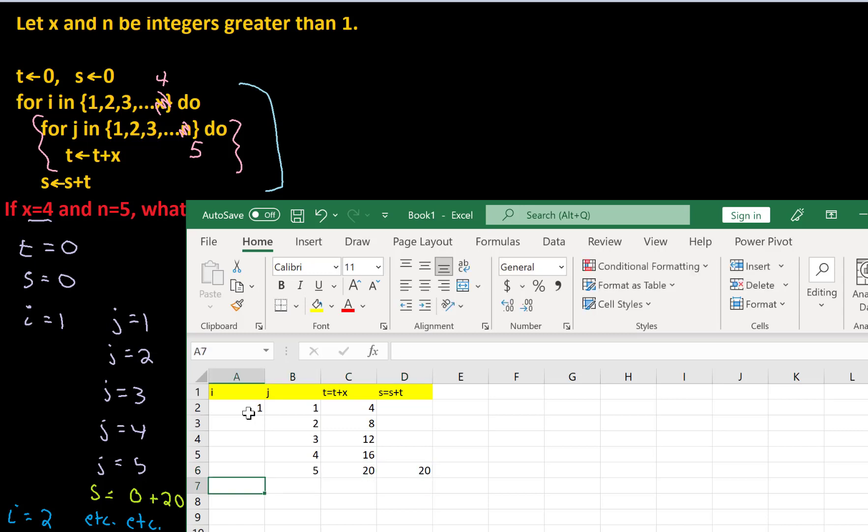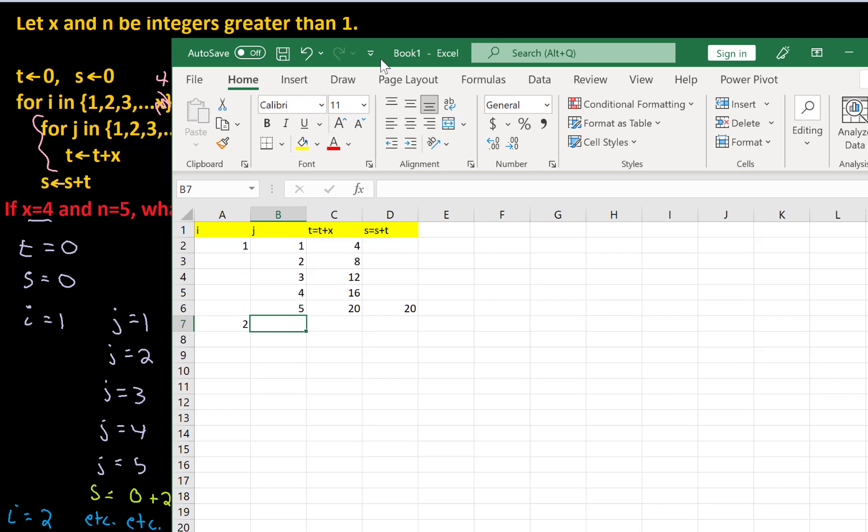All right, now we come down and we're going to let i equal 2. And we're going to play the same game with j. We're going to loop through all these values for j. And so the first time we come in here, we're going to let t equal t plus x. Well, t is currently 20. So adding 4 to it is going to give me 24. And I don't do anything with s at this point. I keep going.